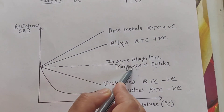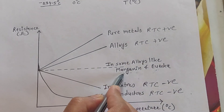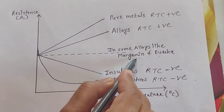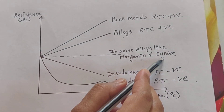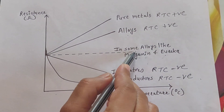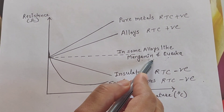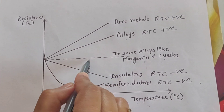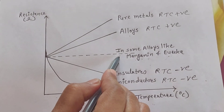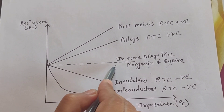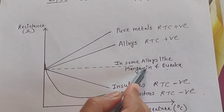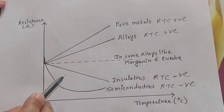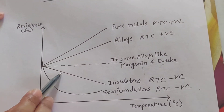However, in some alloys like manganin and eureka, the change in resistance is almost zero, so resistance remains constant. Manganin is a mixture of copper, manganese, and nickel; eureka is a mixture of copper and nickel. Because of this property, they are used as standard resistance boxes.